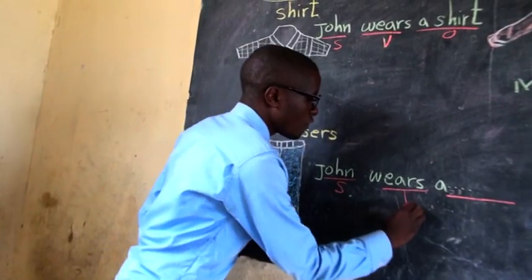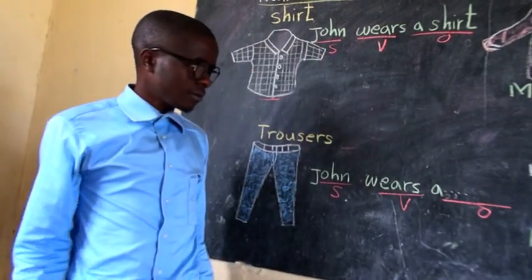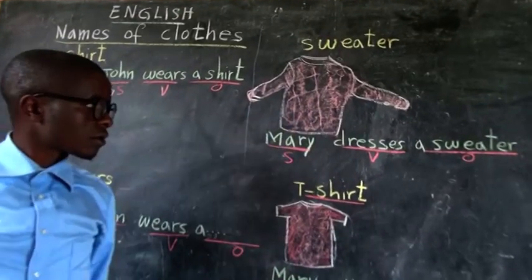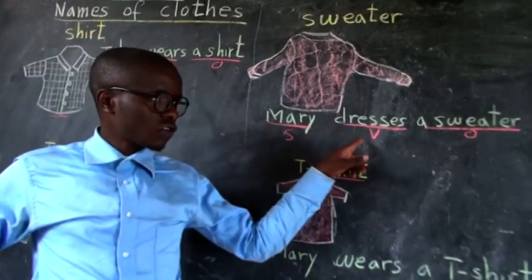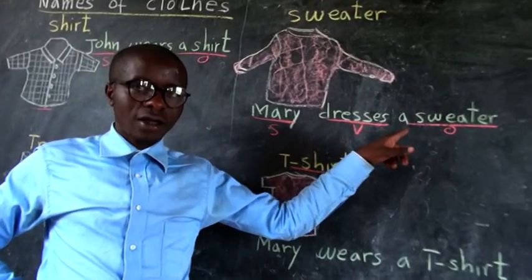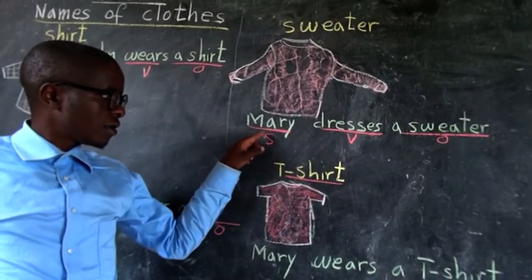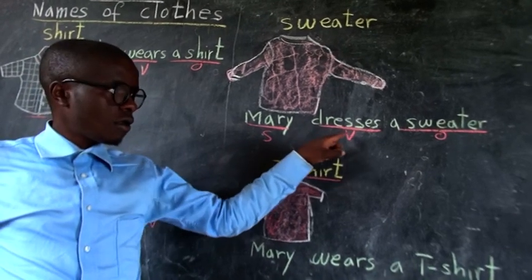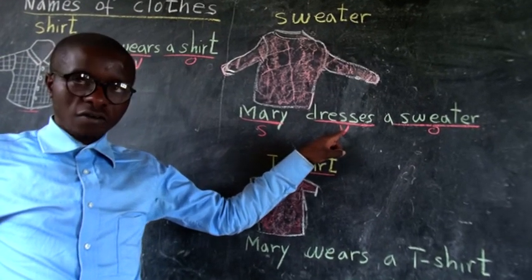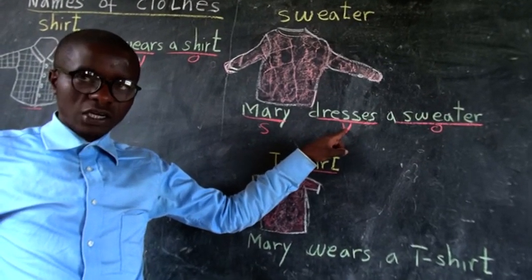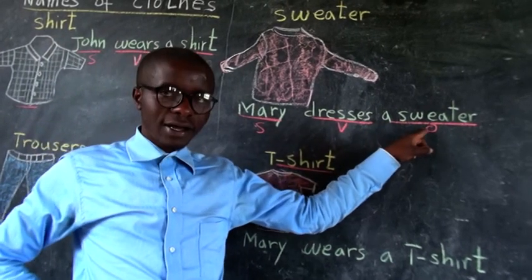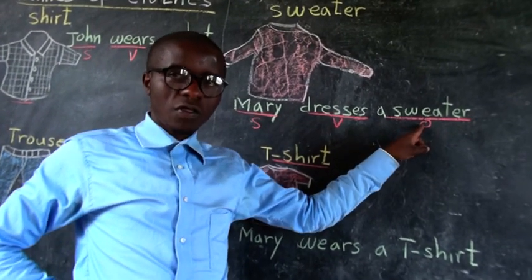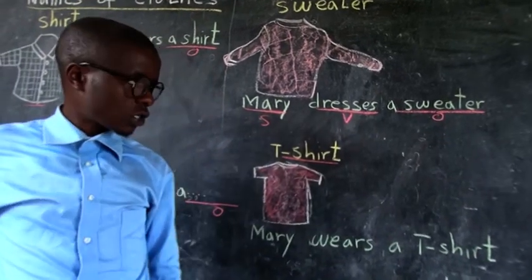Subjects, verbs, and objects. A sweater. Mary dresses a sweater. Mary is the subject. Dresses is a verb or action. A sweater is the object — something which receives an action.